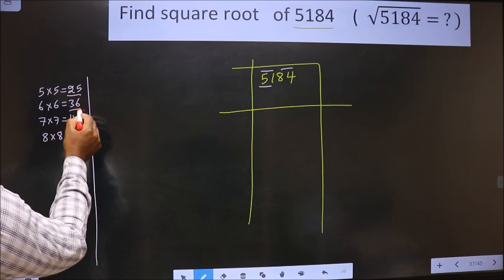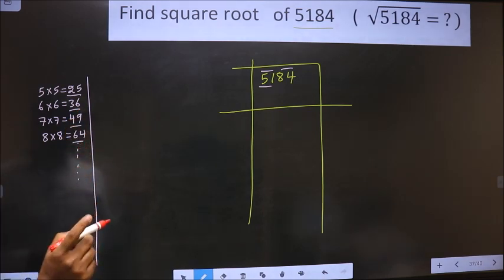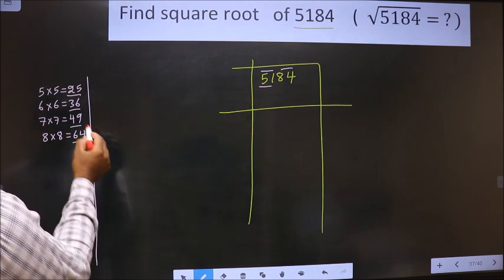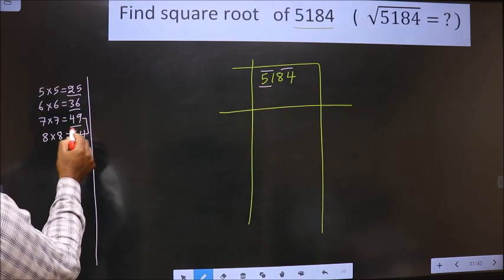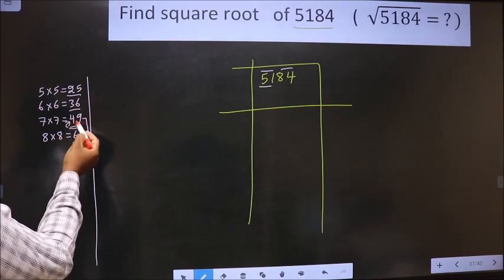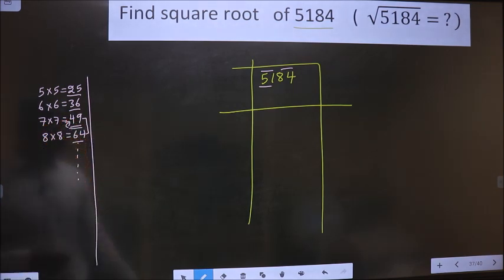These numbers are called perfect squares. Here we have 51. It lies between these two numbers, so we take the smaller number, that is 49. 49 is for 7. 7s 49.